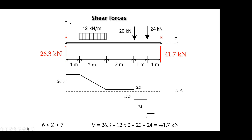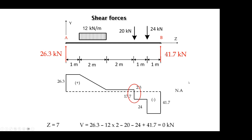Adding this to the shear force diagram, at the last point of the structure where Z equals 7 (point B), the summation of forces to the left gives a shear force equal to zero — closing the diagram. So 41.7 is the value of the reaction to the right of this simply supported beam. With this shear force diagram, we have verified equilibrium and found the point where the shear force equals zero, which is the location of the maximum moment.